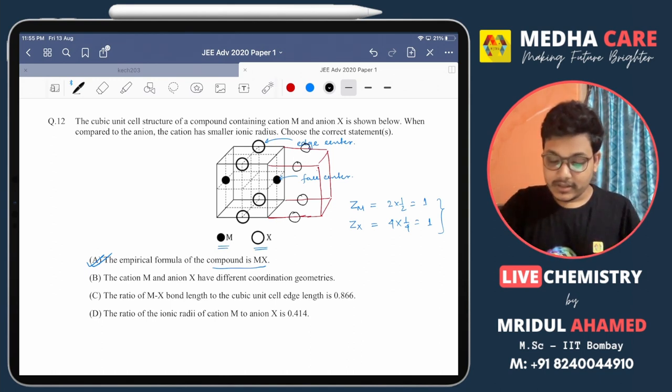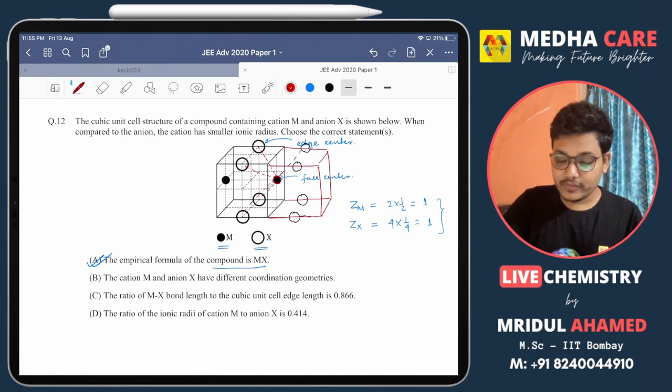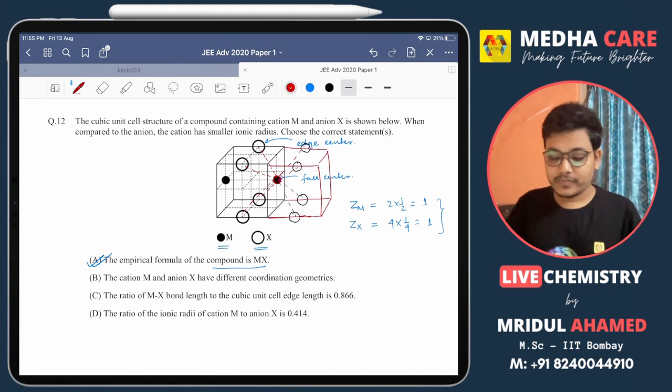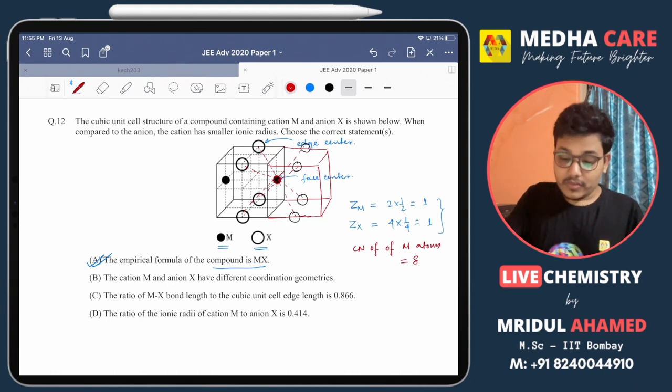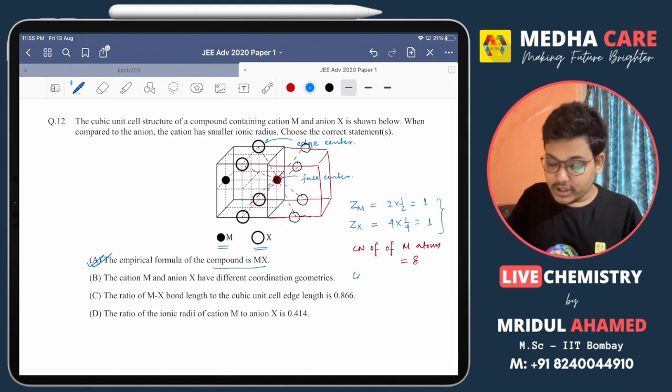So the atom X in this cube will be present here. These are X atoms. Now you can clearly see that this M atom is connected with four atoms in this cube and another four atoms in this cube. So clearly it can be seen that coordination number of M atoms is 8.